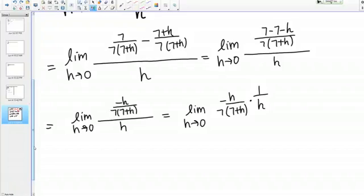What this allows us to do is see that this H cancels. I have a factor of H in the top and a factor of H in the bottom, so I cancel out those H's.